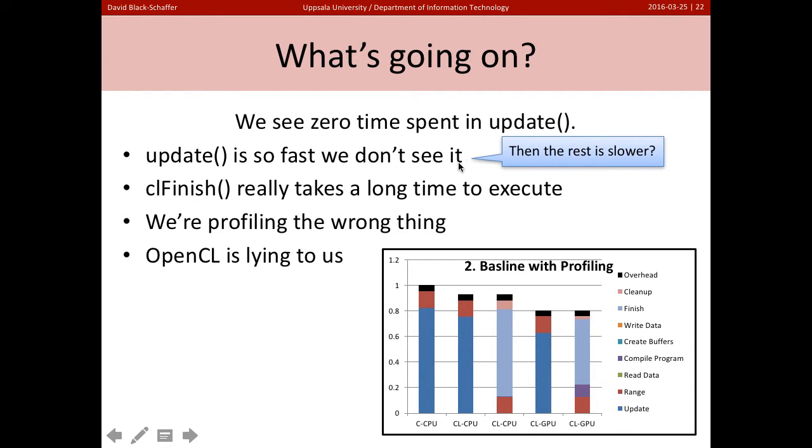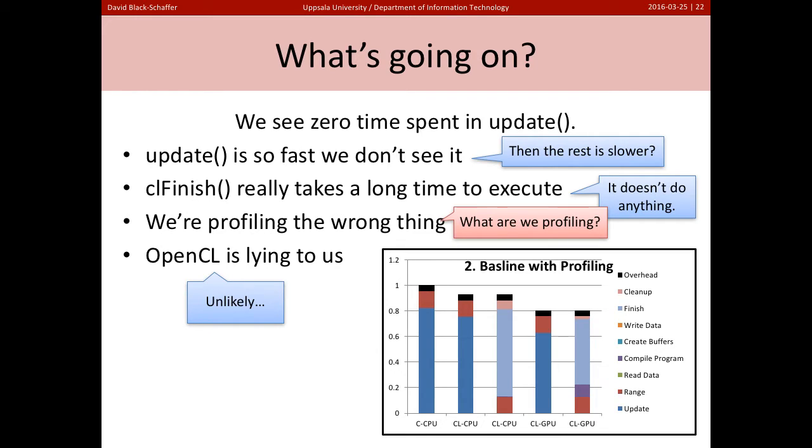Update is really not as fast that we don't see it. Update is going to be 35 times faster, so we should still see it on here somewhere. We're taking this chunk of time here and a 35th of that's still going to be visible on the graph. Does CL finish take a long time to execute? It doesn't do anything. CL finish is just waiting. Why should it take a long time to execute? Is OpenCL lying to us? It's pretty unlikely. The profiling is going to be pretty accurate here. We're just timing how long it takes to do the commands. So that only leaves one option, that we're profiling the wrong thing. So if we are profiling the wrong thing, what is it that we're actually profiling?